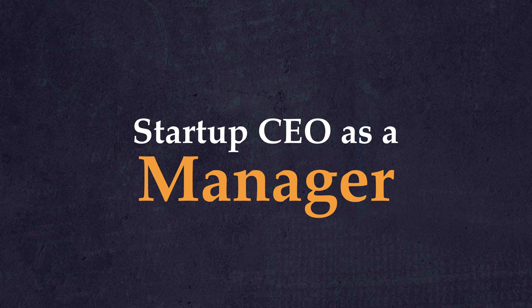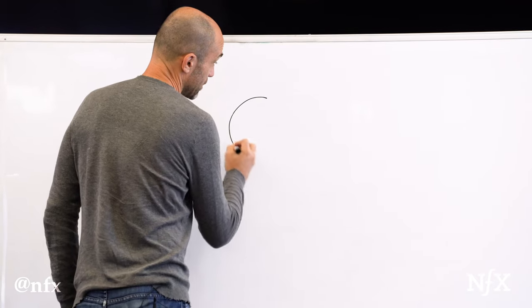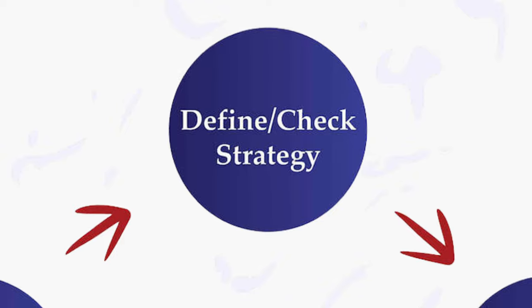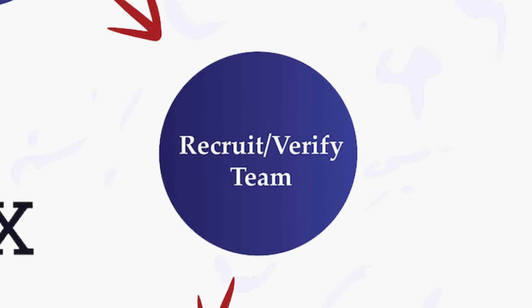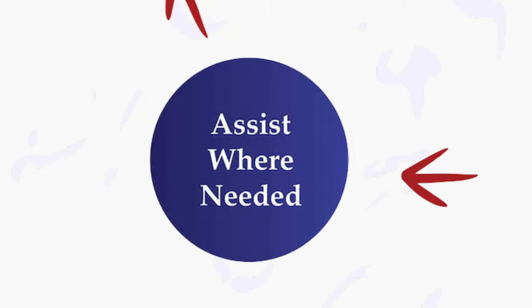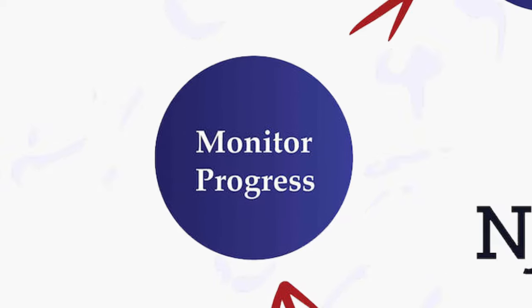The first part of being a great startup CEO is to be a good manager. Over the years I found a way to represent what I think the startup CEO role is as a manager, and it includes a very simple cycle. This cycle basically could be painted like this: defining your strategy, recruiting the team that can execute it, setting goals, assisting where needed, and monitoring progress.